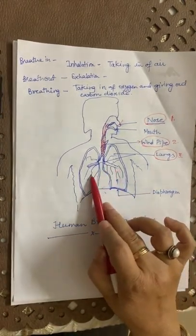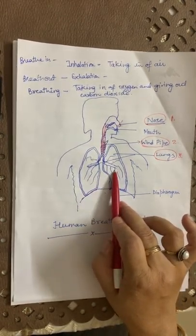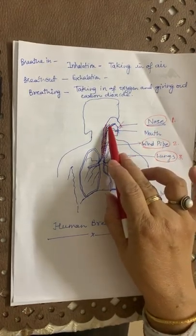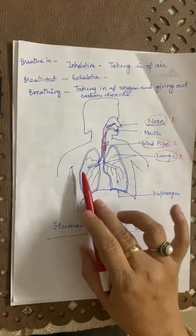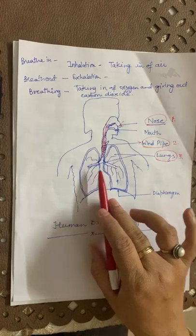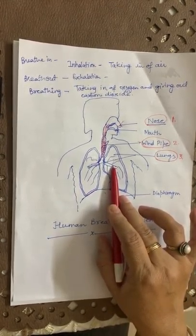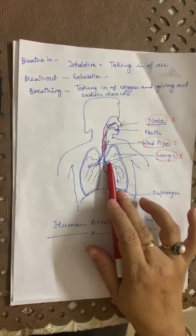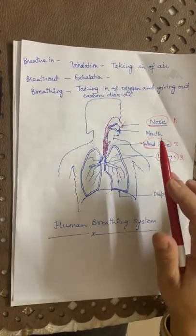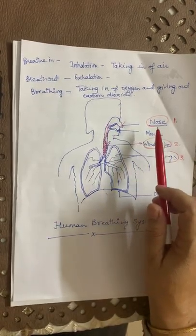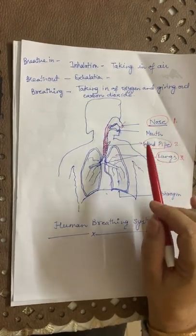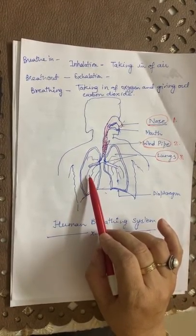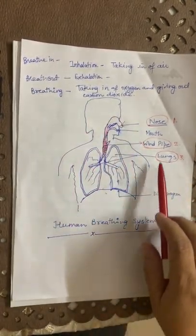In the lungs, oxygen is taken up by the blood and carbon dioxide is unloaded. Air enters the lungs through the windpipe. In the lungs, oxygen is taken up by the blood, and carbon dioxide is driven out of the body through the nose by the process of exhalation. The oxygen-rich blood from the lungs is then circulated to all parts of our body.